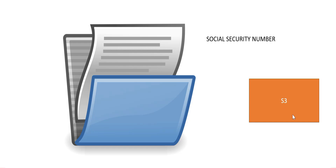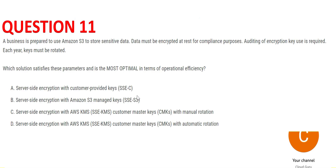So that even if someone by mistake gets access to the file, they cannot open it — they will not be able to make sense out of it. Another important requirement is there has to be a provision for yearly rotation of encryption keys, and we should be able to audit the encryption keys. The question asks for the most optimal solution in terms of operational efficiency. Option A suggests using customer-provided keys.